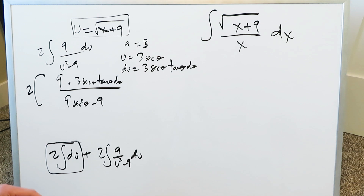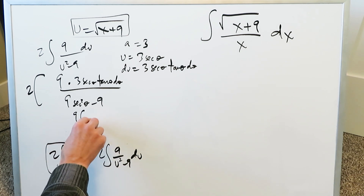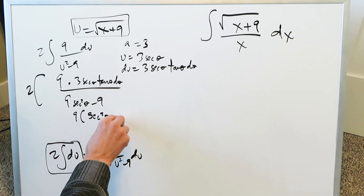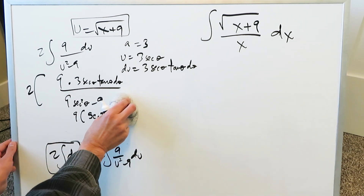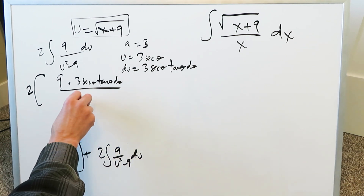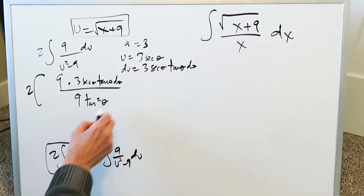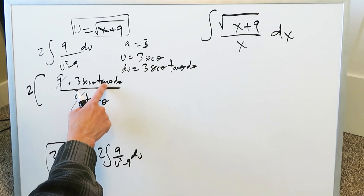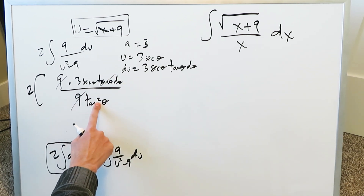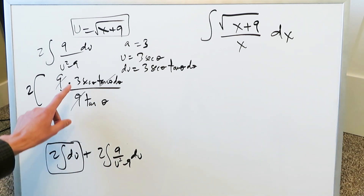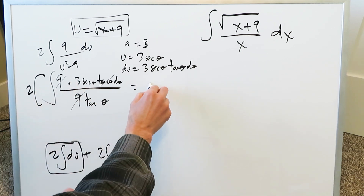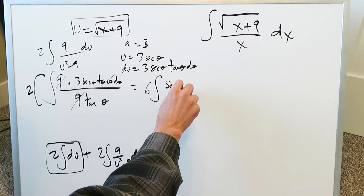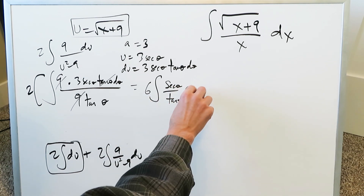Keeping the 2 out, I have 9 in the numerator and du equals 3 secant theta tan theta d theta. In the denominator I substitute u to get 9 secant squared theta minus 9. Looking purely at the denominator: 9 secant squared theta minus 9 — factor out the 9 — gives 9 times (secant squared theta minus 1), which equals 9 tan squared theta. Converting the denominator to 9 tan squared theta, the 9s cancel and one factor of tan theta cancels with the tan squared. So I'm left with a 3 in the numerator and a 2 outside, giving a 6.